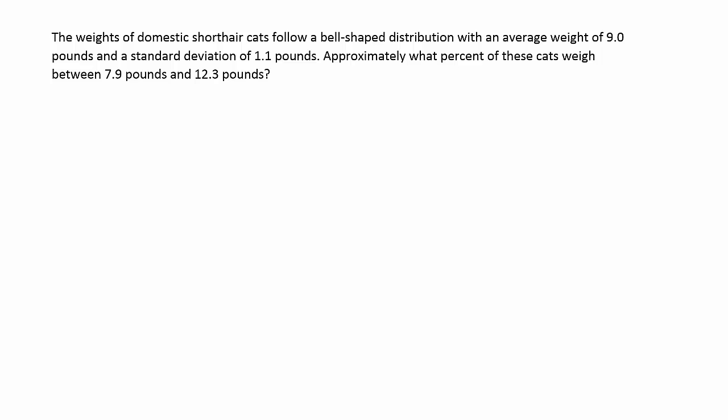All right, so the first thing we want to do is try to determine what type of problem this is, and we have to do that by looking at key words. So I'm going to look at this phrase here, approximately. That's a word that we see often with empirical rule. But we need to have more than that. We also need to have the idea that we're looking for the percent of data that lies within some given interval. Sure enough, it says what percent will lie between this number and this number? So we have a strong indication already that this is the empirical rule.